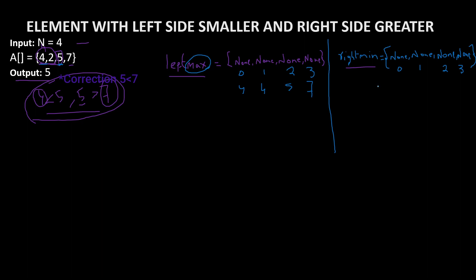For the minimum value, we take the minimum from the right side. For index 0, including 4 and checking all elements to the right, the smallest is 2. For index 1, again 2. At index 2, out of 5 and 7, minimum is 5. The last index remains 7. Notice that left_max at the boundary never changes, and right_min at the boundary doesn't change either. This question excludes boundary values - we take only the mid values.